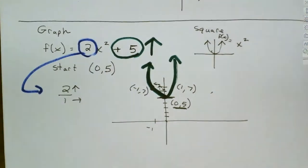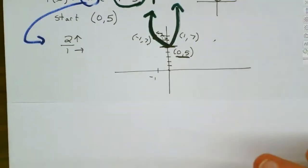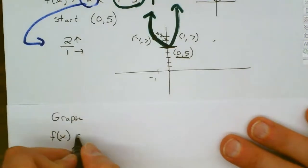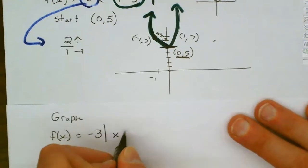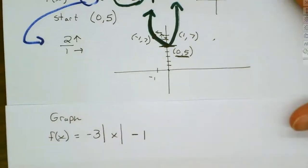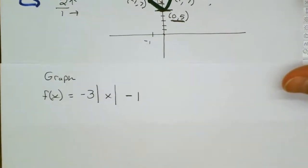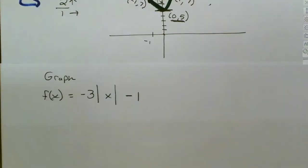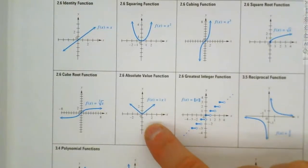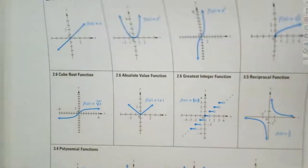Let's graph f(x) = -3|x| - 1. The first thing is to go to the back cover of the textbook and look up the function. The operation is absolute value, and the absolute value graph looks like a V — not a U, but a V.